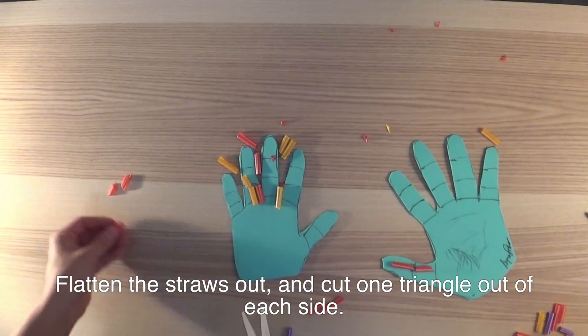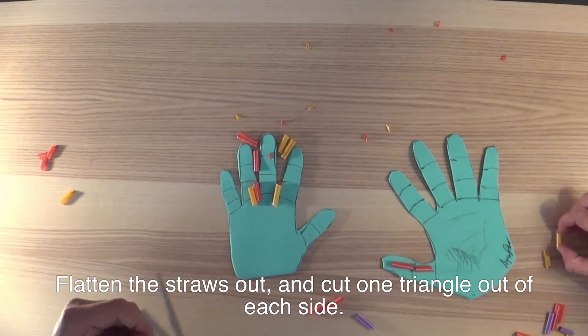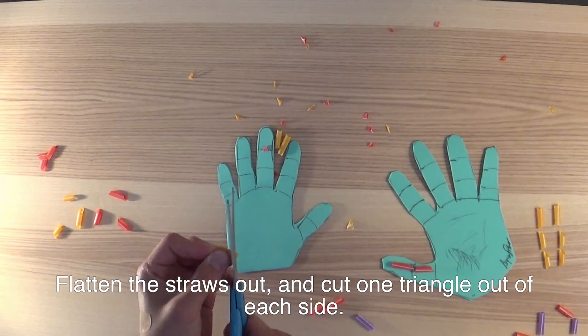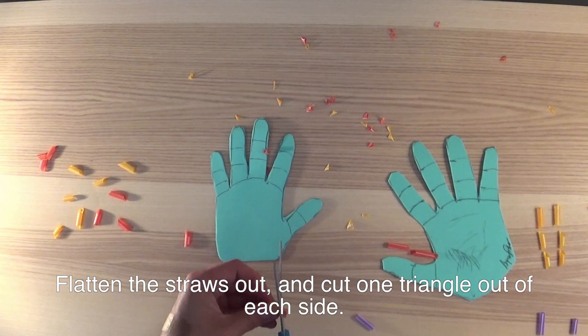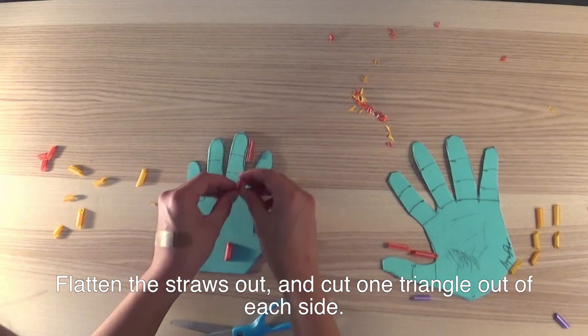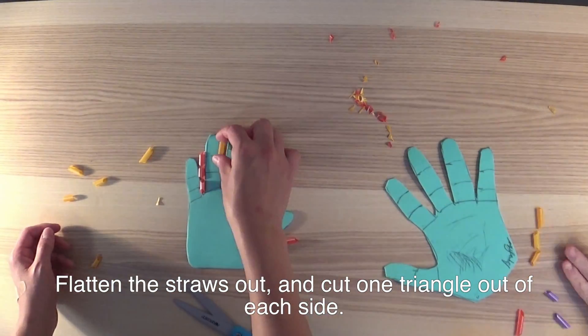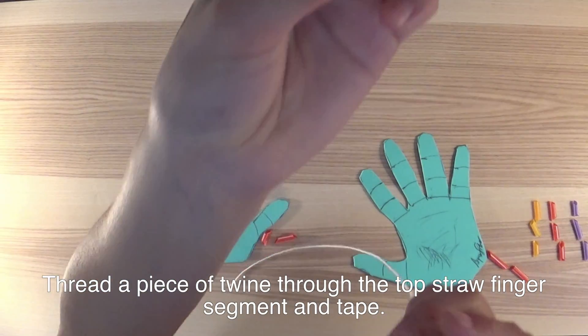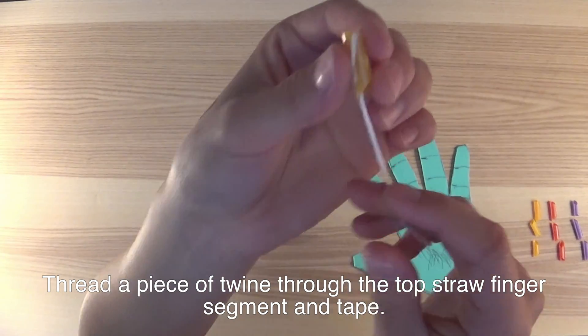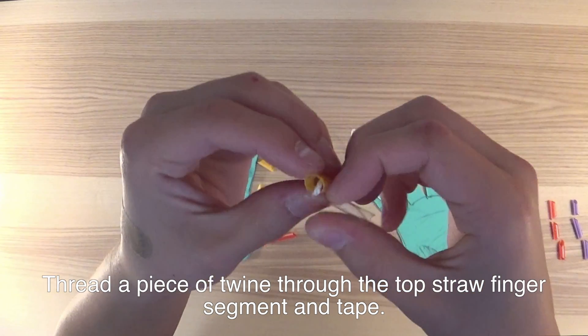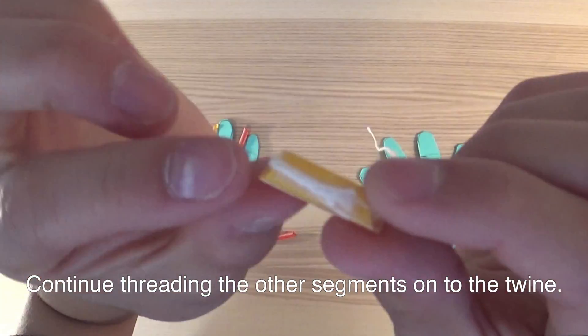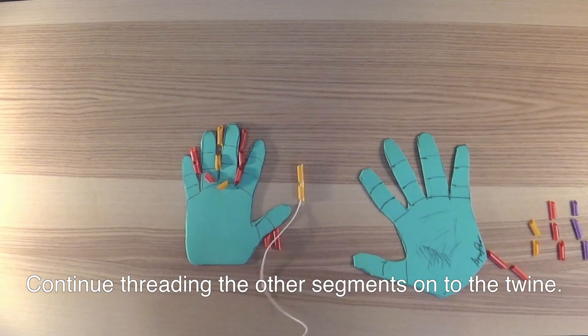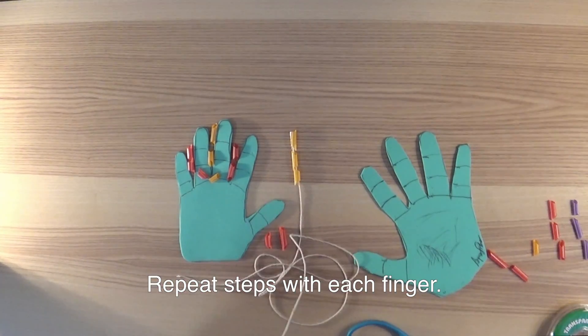Connect the straws to each finger segment and tape. Continue threading the other segments onto the twine. Repeat these steps with each finger. Each finger should have its own individual piece of twine.